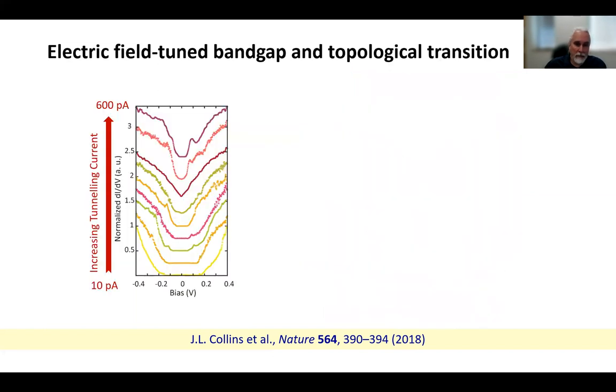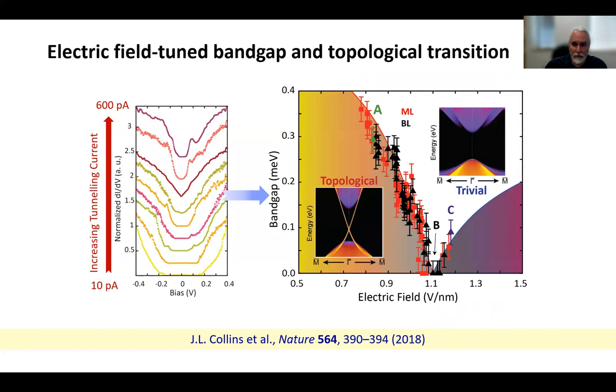So we can plot a phase diagram of that band gap versus electric field. And it turns out in monolayer and bilayer sodium-3-bismuth, we can close and reopen the band gap. It starts out topological and turns into a conventional insulator. The critical electric field is about a volt per nanometer, which is an experimentally achievable field in devices. And the insets here show the density functional theory calculations for the zero electric field and high electric field states. And the yellow lines are the edge states. And so you can see that the high field state indeed is a trivial insulator.